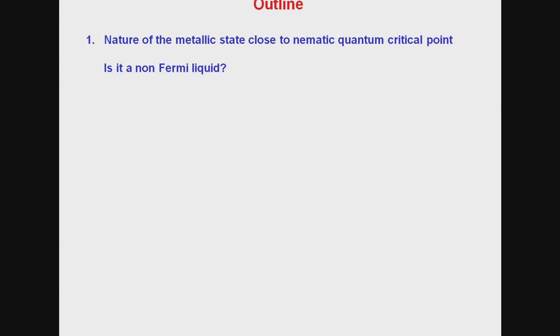So here is the outline of the talk. The first question that I'm going to address is what's the nature of the metallic state close to the nematic quantum critical point, and is it a non-Fermi liquid as we are used to think of typically for metals close to a quantum critical point? The second question, which I would like to discuss, is the following. Is BCS pairing promoted by the fluctuations, by the soft fluctuations, around this nematic quantum critical point?